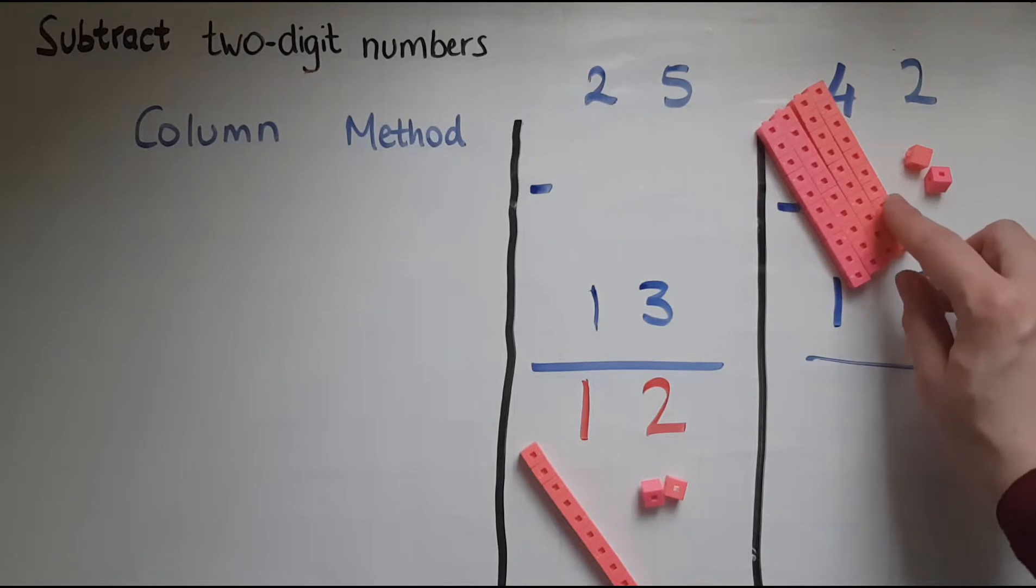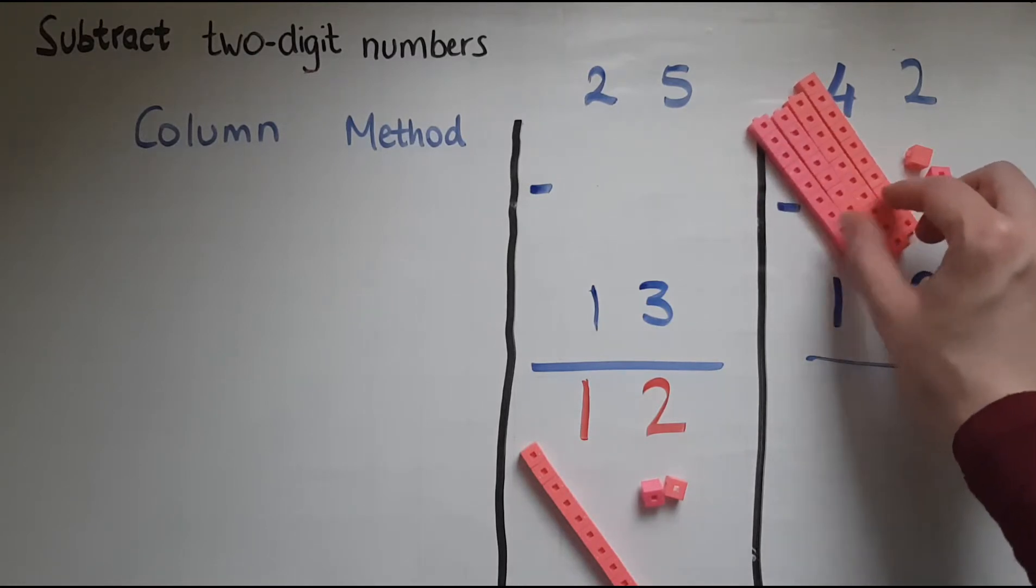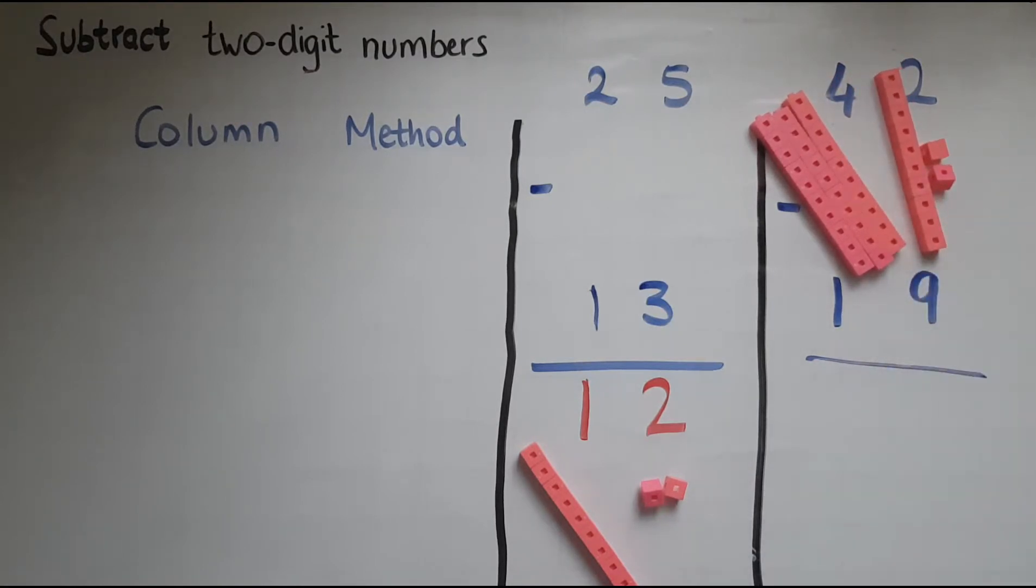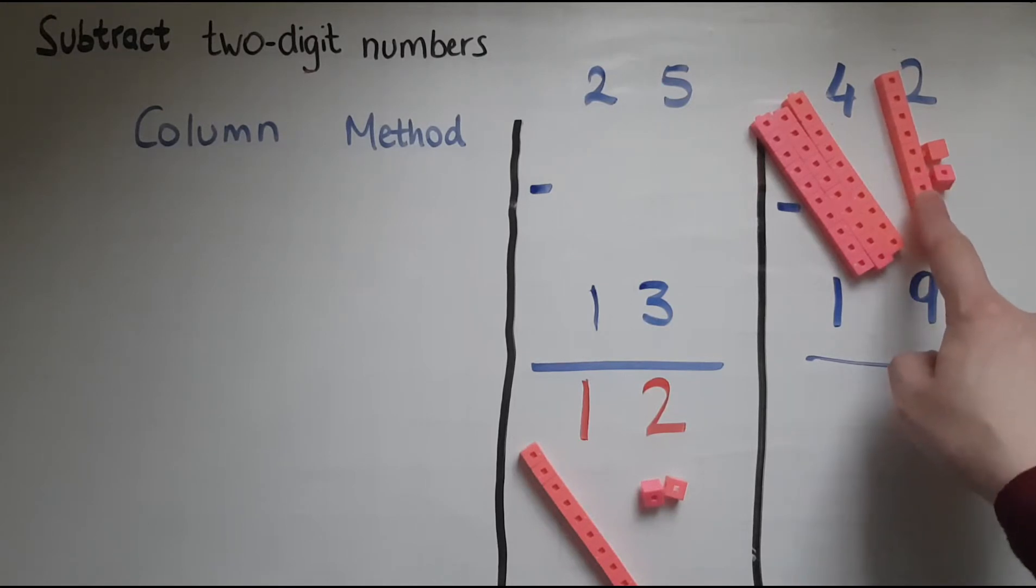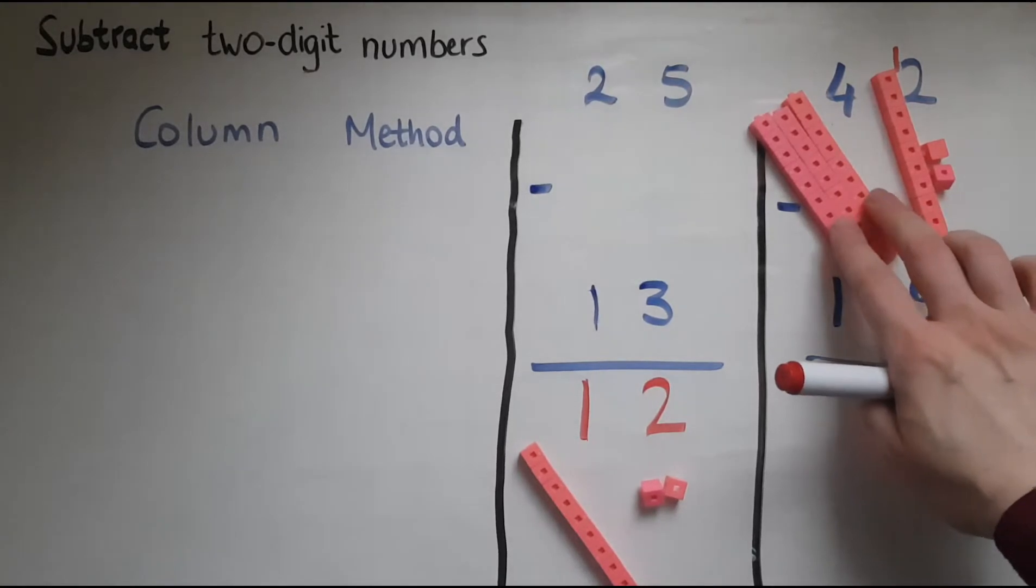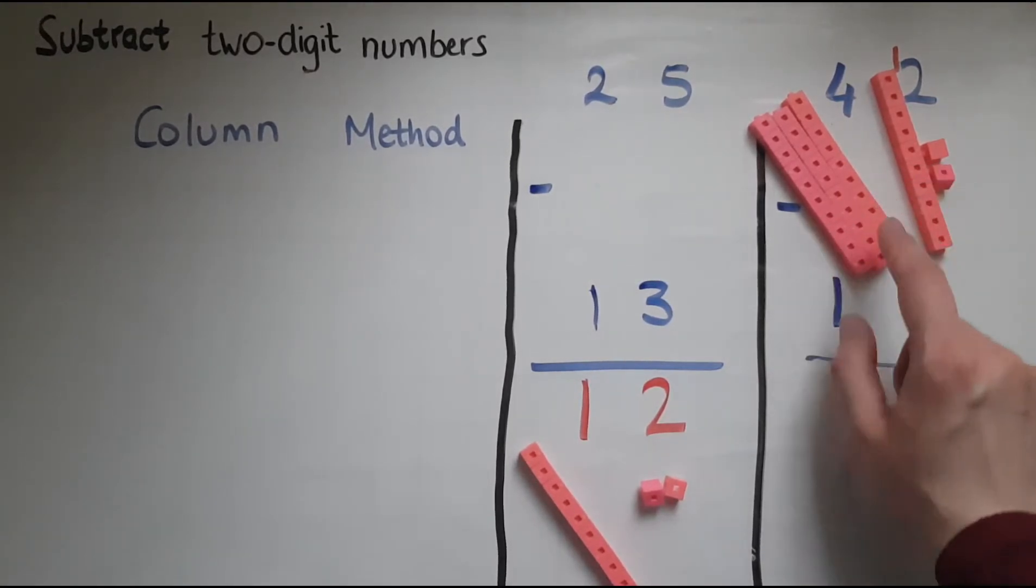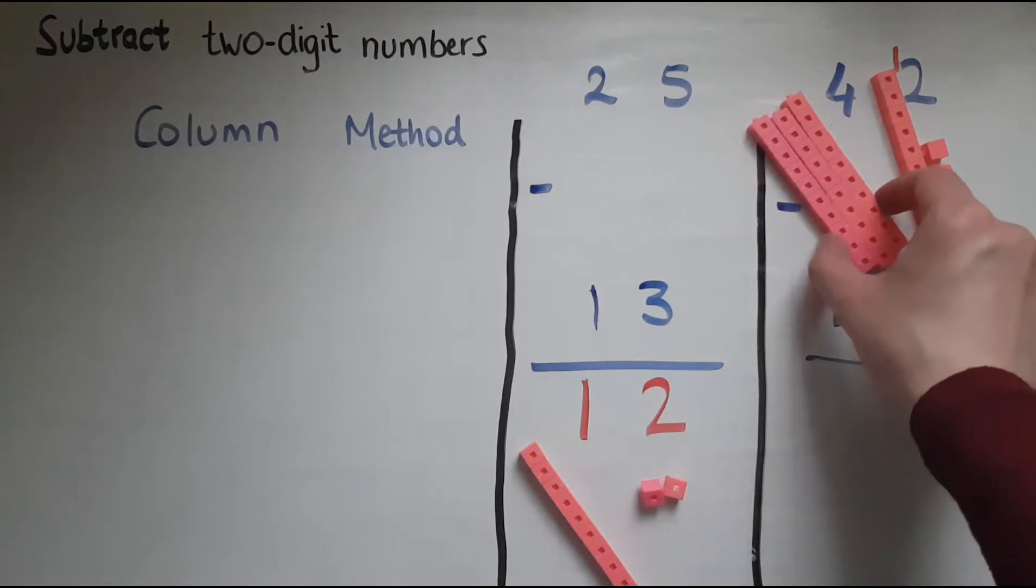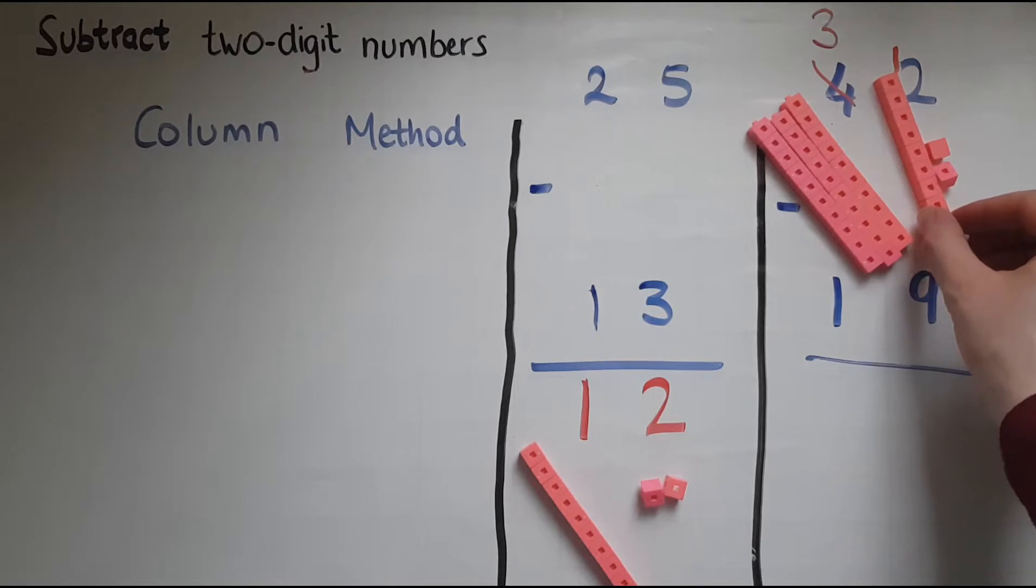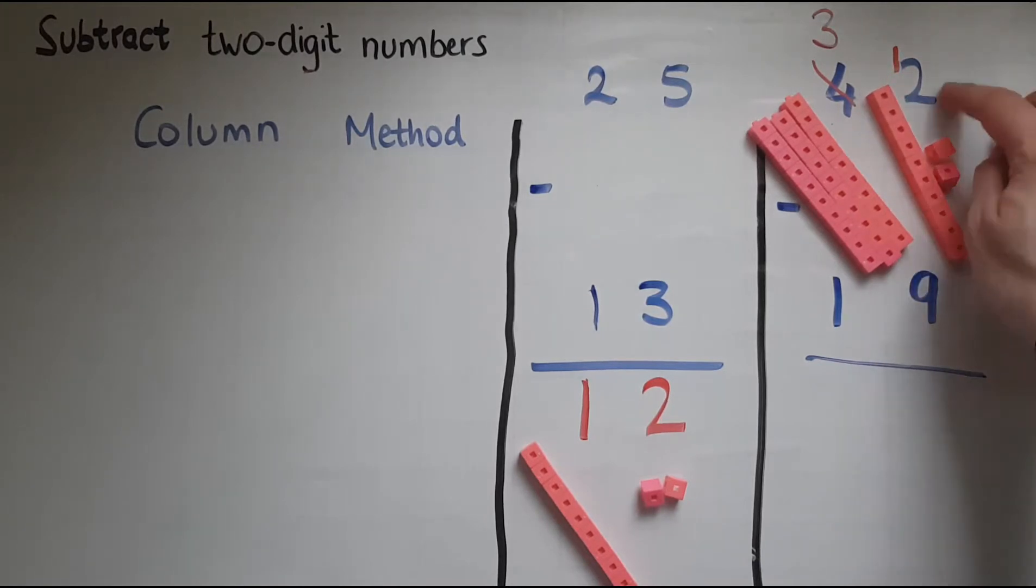So what I will need to do is borrow a set of 10 from the tens here, which means that I'll transfer this over to the units. So that has now become 12 because I've got 10 and the two that makes 12. So what is happening to the four now is that it has actually become three because we have only three lots of 10. So this four becomes a three because we actually gave one lot of this to the units to the two which became 12.